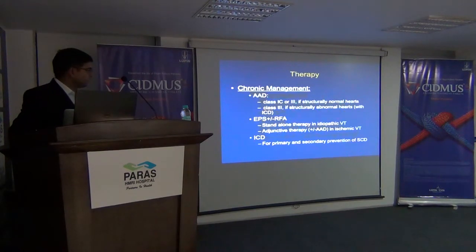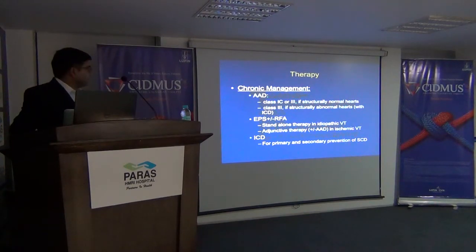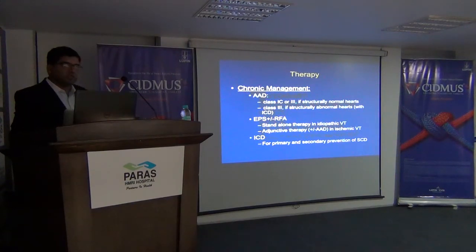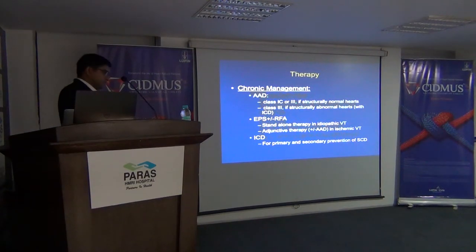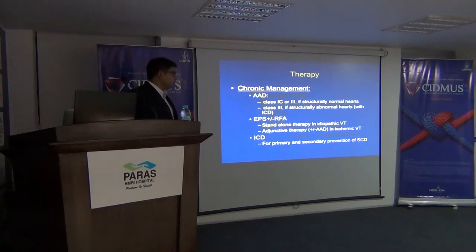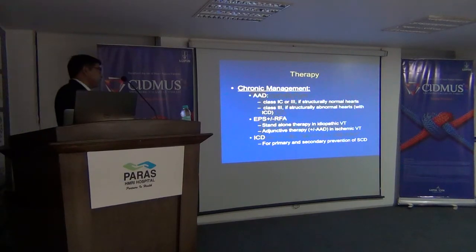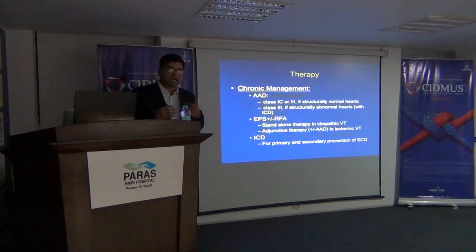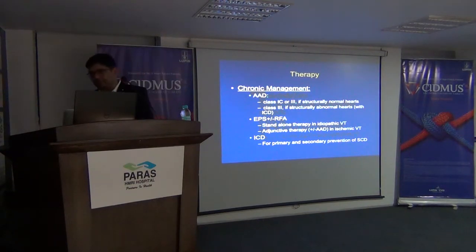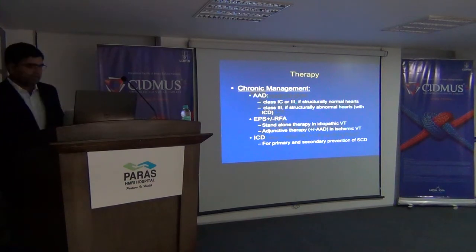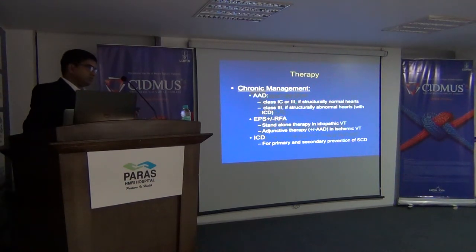And then try to integrate for baseline management. For chronic management, these are some proven therapies — antiarrhythmic drugs of course. There is a big role for EPS plus RFA as well, and it is one of the standalone therapies for idiopathic VTs. If there is an ischemic VT in which you cannot give foolproof success with ablation, it has to be used as adjunctive therapy. For example, if the patient is already on a pacemaker and getting repetitive shocks, you should try to use some ablation procedures as well.